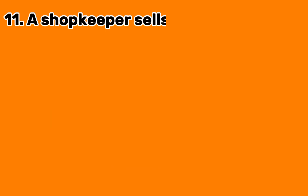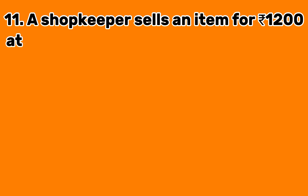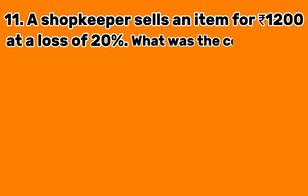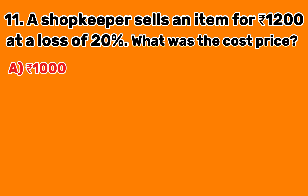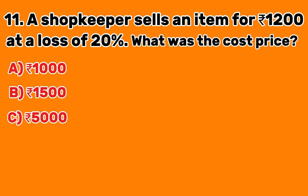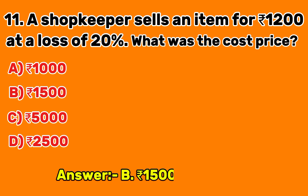Question 11: A shopkeeper sells an item for 1,200 Indian rupees at a loss of 20%. What was the cost price? A. 1,000 Indian rupees. B. 1,500 Indian rupees. C. 5,000 Indian rupees. D. 2,500 Indian rupees. Answer B: 1,500 Indian rupees.